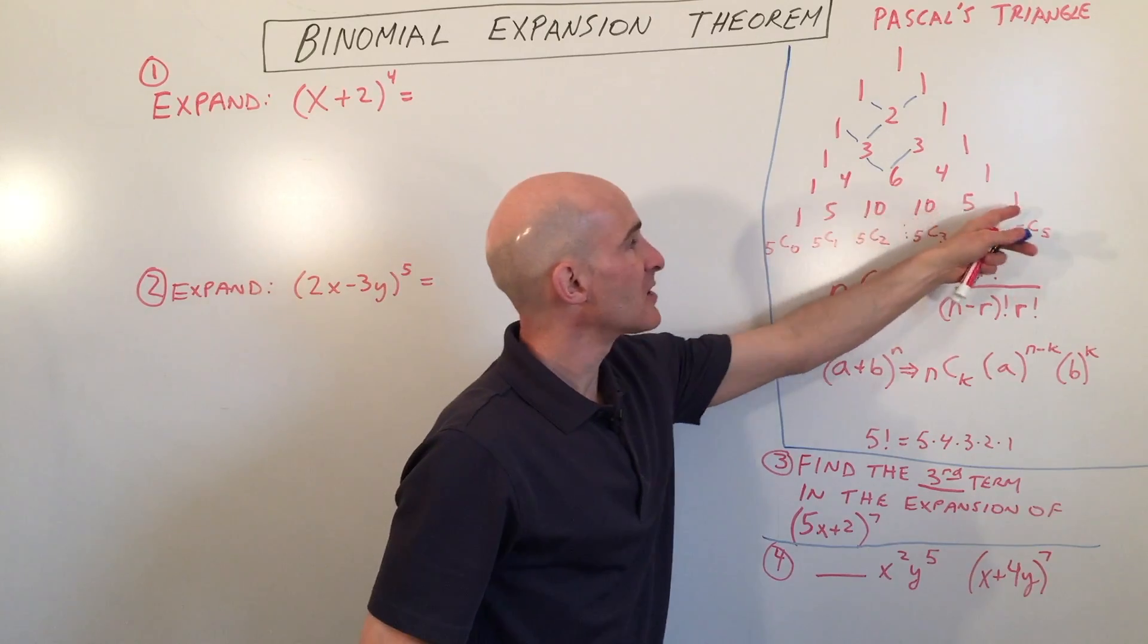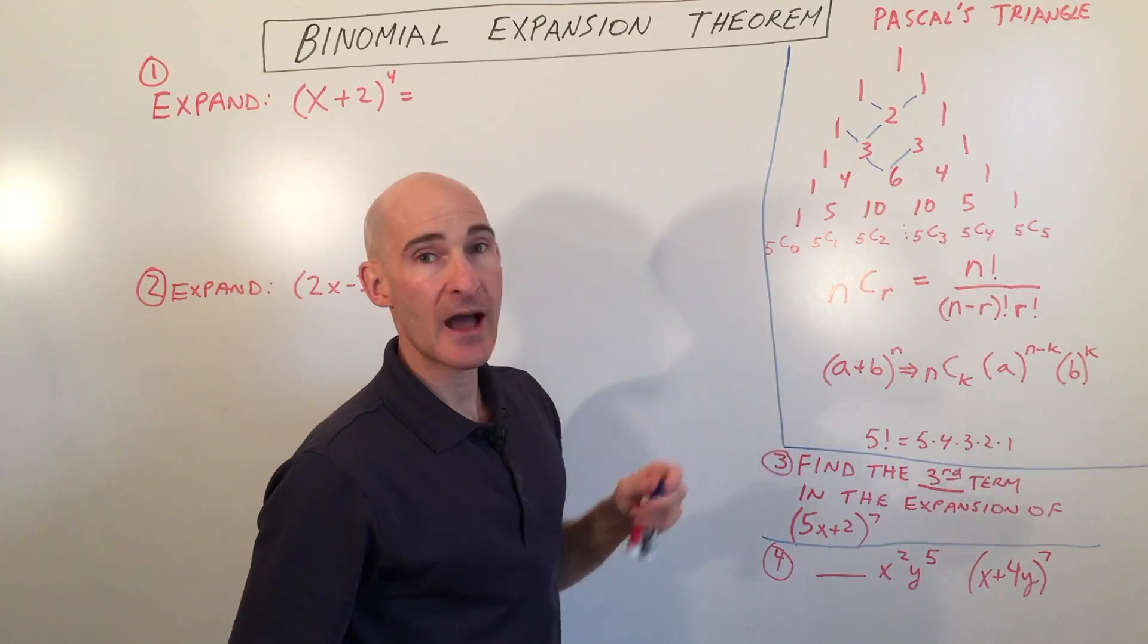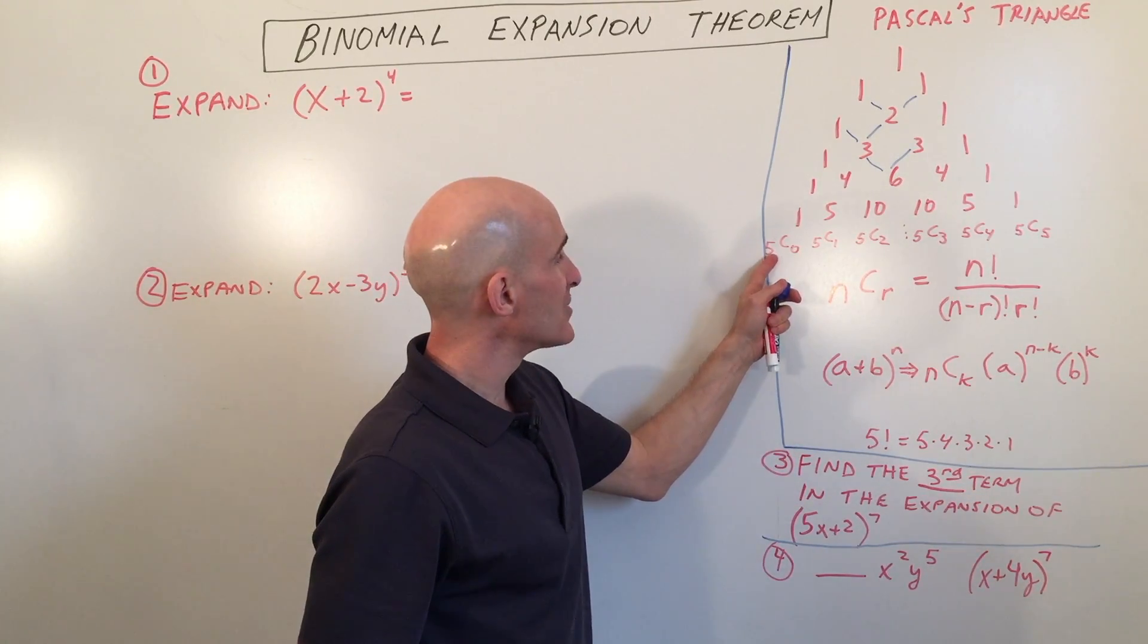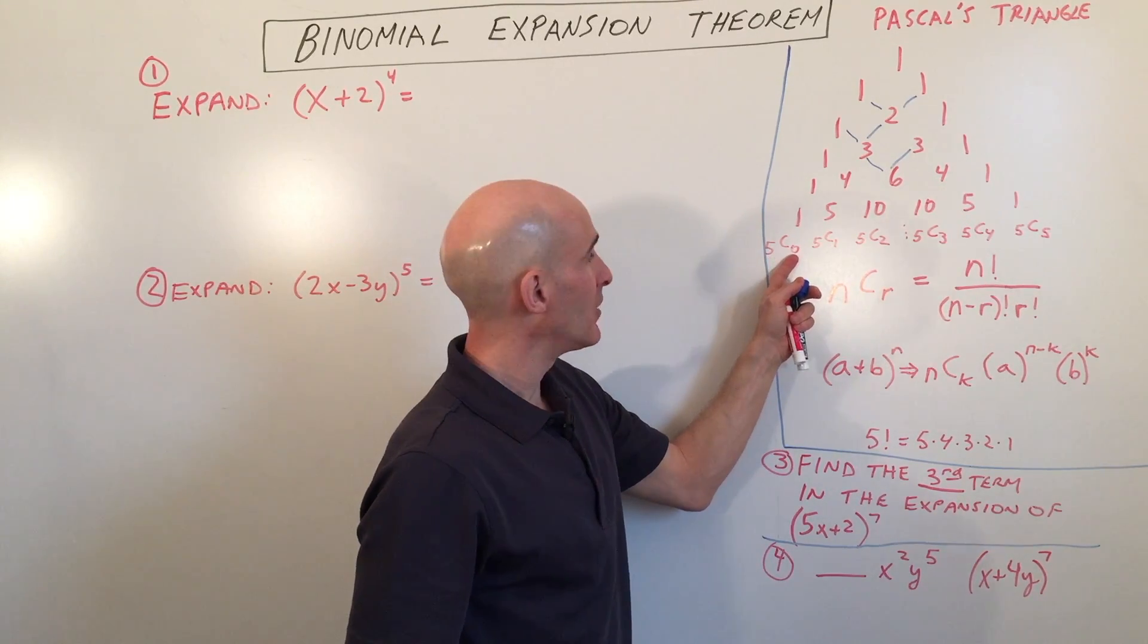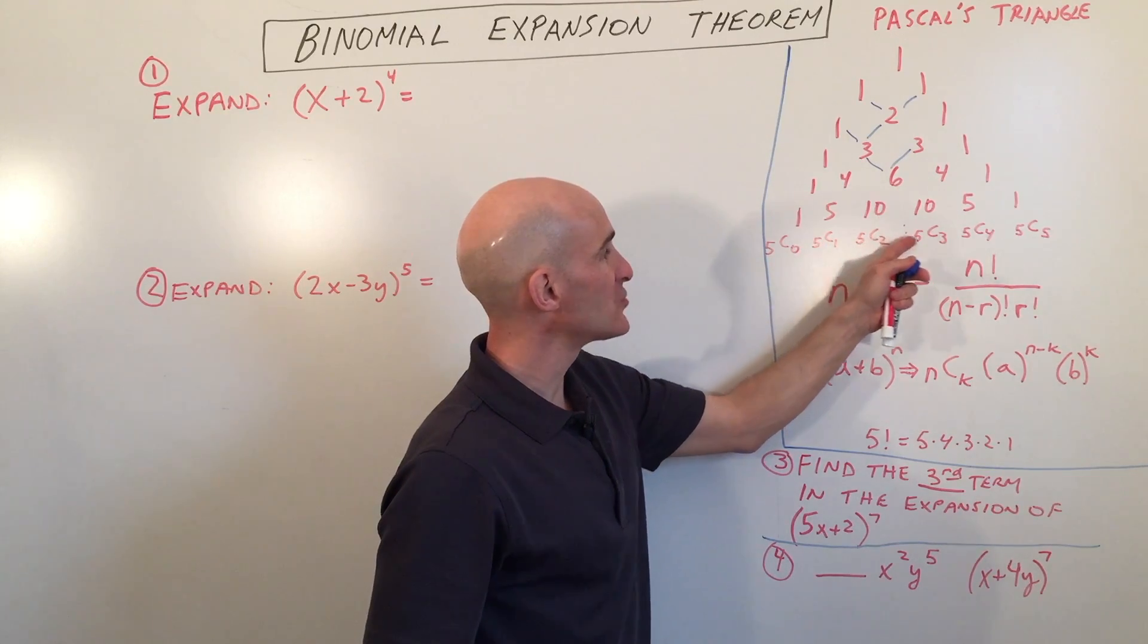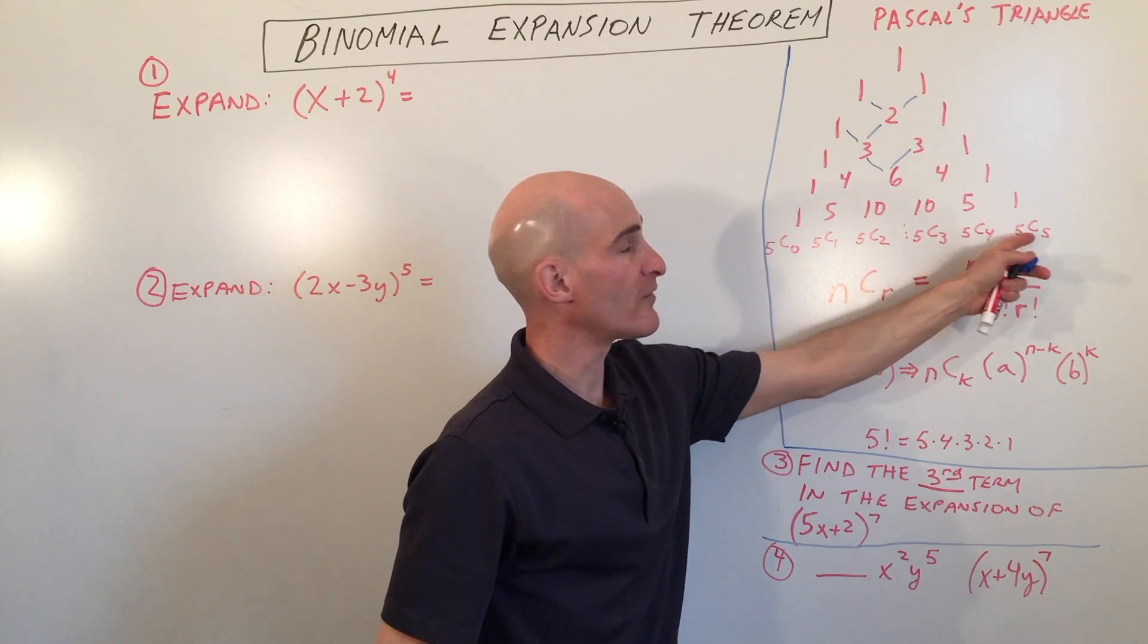And where these terms actually come from is from the combinations. You can see here that, like in this row, this fifth row, I've got 5 choose 0, 5 choose 1, 5 choose 2, 5 choose 3, 5 choose 4, 5 choose 5.